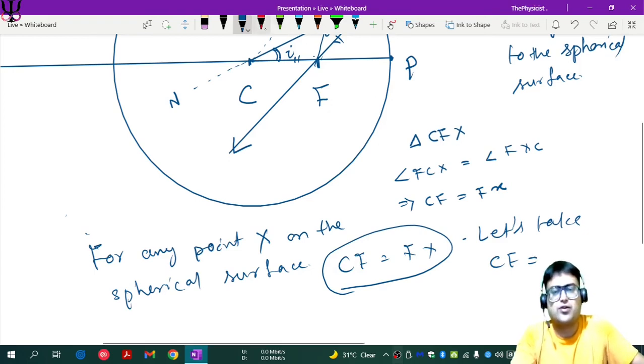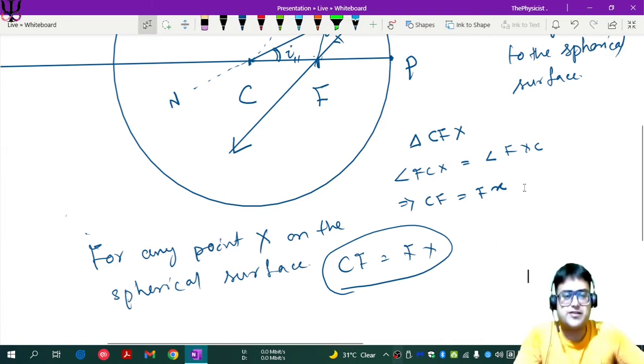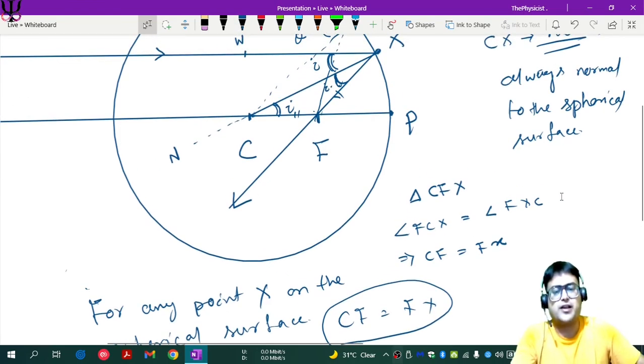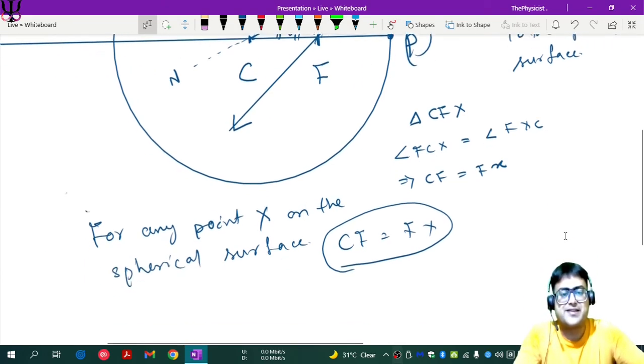Let's not do that because that would be a violation of the sign convention, coordinate sign convention. But let's do it properly. Imagine that any point, for any point CF equals to FX. If that point is pole itself because pole is a point on the spherical surface. If X is P, so you can say if X is P, then CF will be the same as FP.